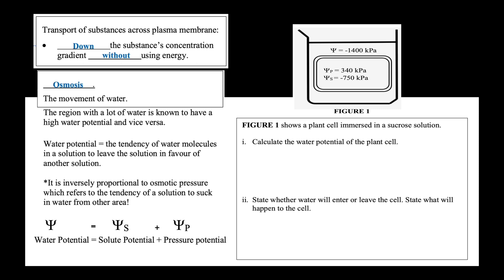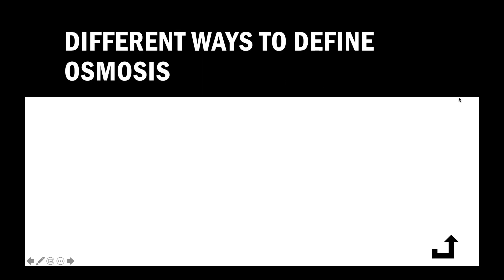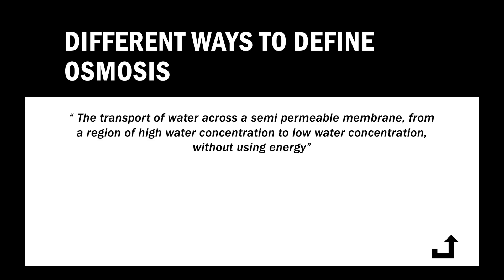Water potential is inversely proportional to osmotic pressure, which refers to the tendency of a solution to suck in water from another area. There are several ways of defining osmosis. You can define osmosis by using the concentration of water molecules, like this: osmosis refers to the transport of water molecules across a semi-permeable membrane from a region of high water concentration to low water concentration without using energy.